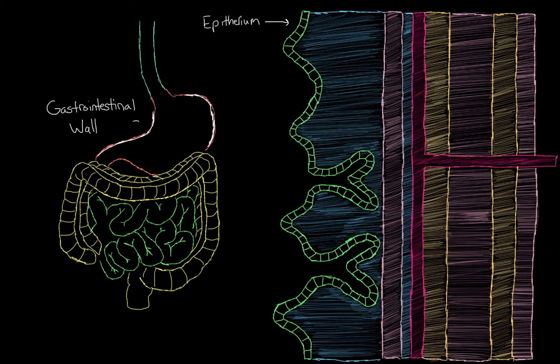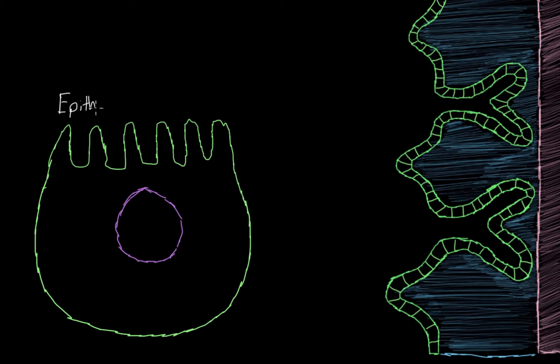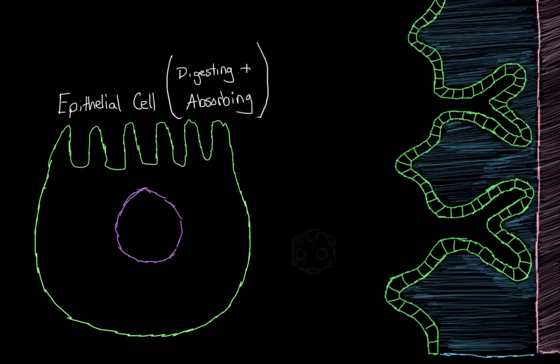It contains all the cells that will be responsible for digesting and absorbing nutrients and water. The virus is going to invade the epithelium. So why don't we zoom in on one of the cells in the epithelium. So this is our epithelial cell. It will perform a lot of really important functions like digesting and absorbing. Now let's say this cell encounters a virus.